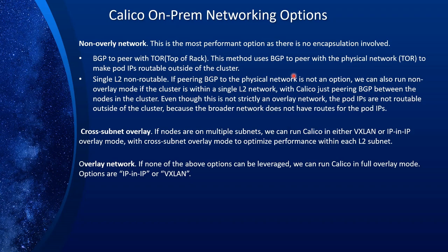These options are very similar for cloud environments — Azure, Google, or Amazon. Although there are some differences: for instance, Azure does not support IP-in-IP. So if you are in a situation in Azure where you can't use non-overlay and you need to use overlay, then you have to use VXLAN. There are also some subtle differences between cloud providers. If you're running in the cloud, I encourage you to read the Calico documentation — I'll provide a link in the description.